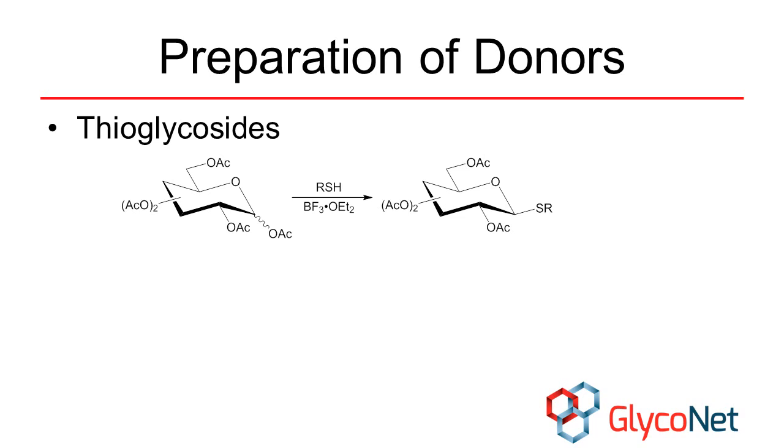Typically, a thiol, such as ethanethiol or thiophenol, is attached to the donor using an electrophilic activator such as boron trifluoride diethyl etherate. If carbon-2 has an acetyl, benzoyl, or acetamide substituent, neighboring group participation will occur to yield a 1,2-trans thioglycoside.